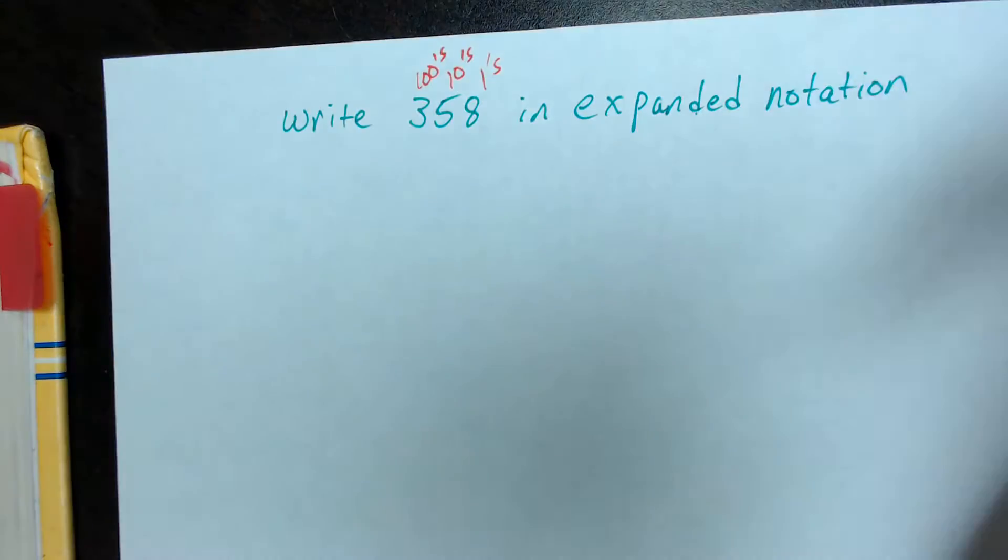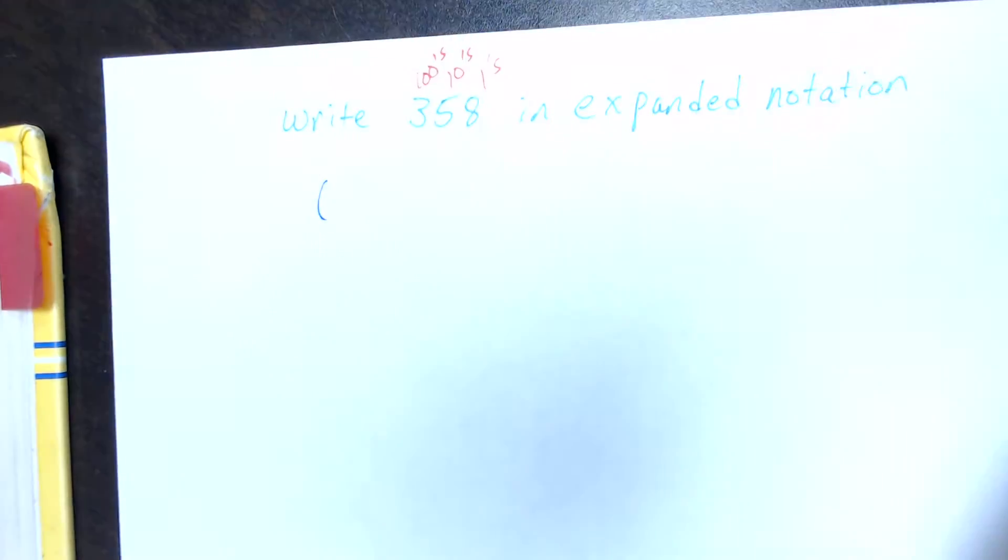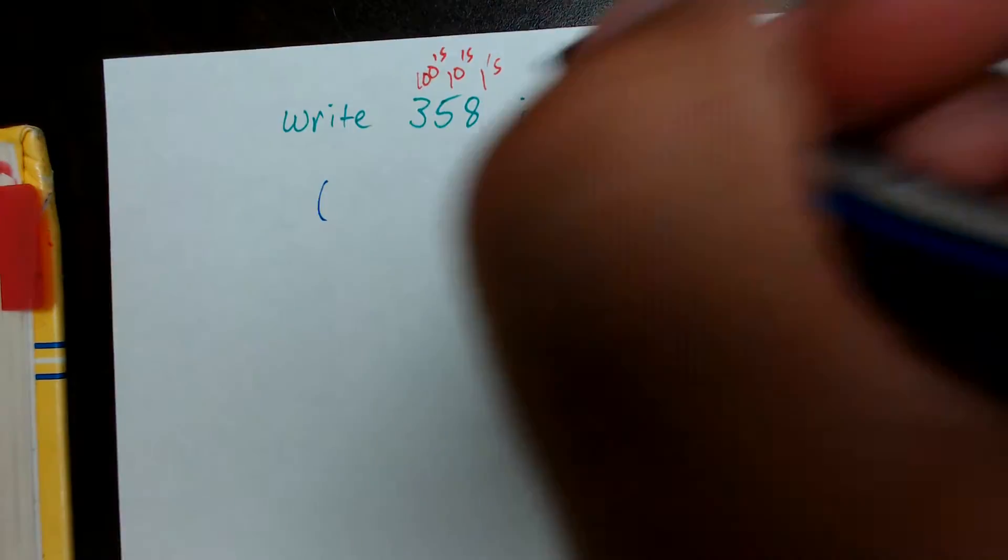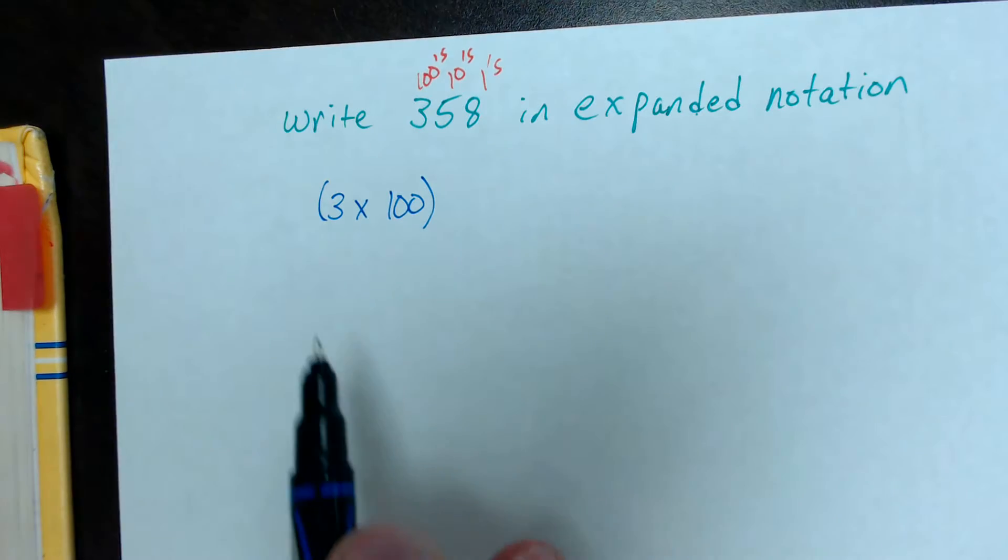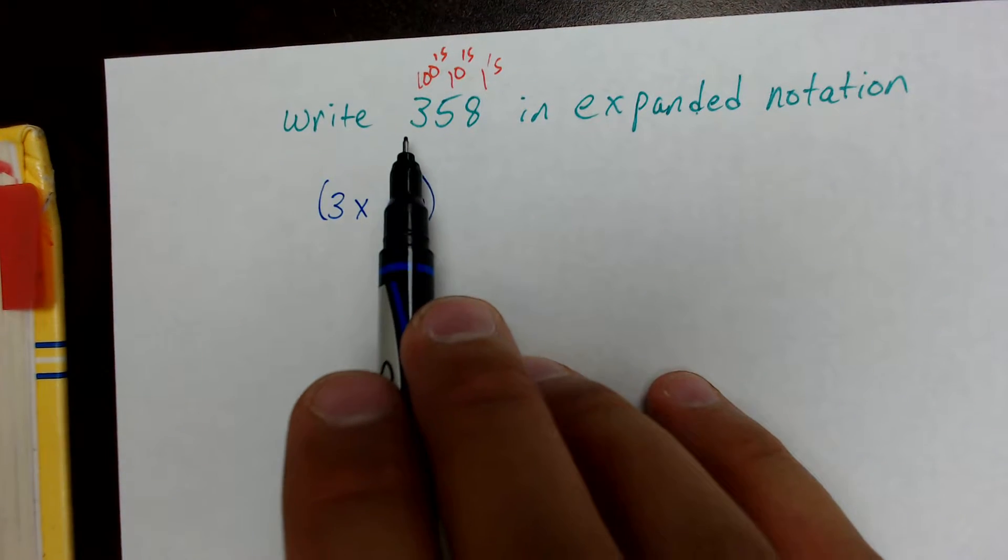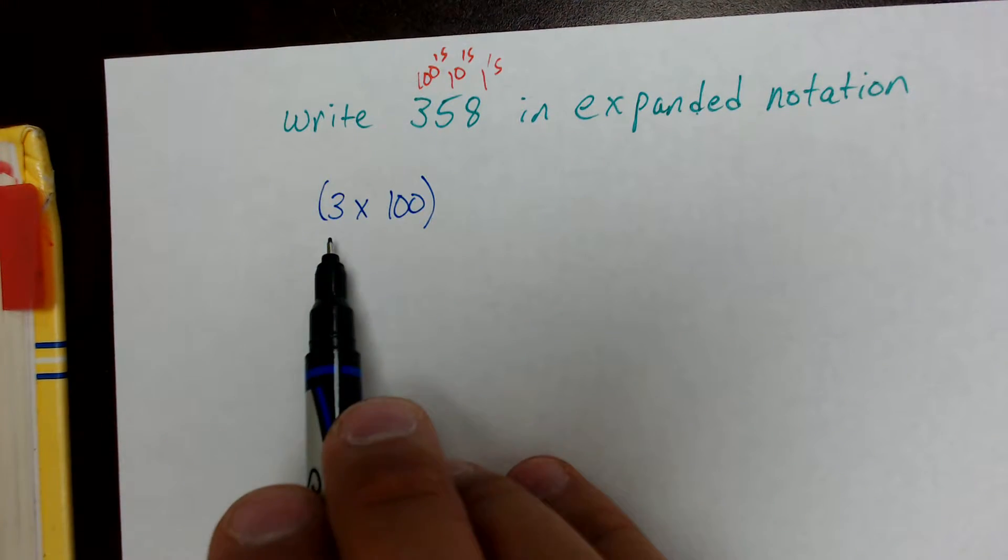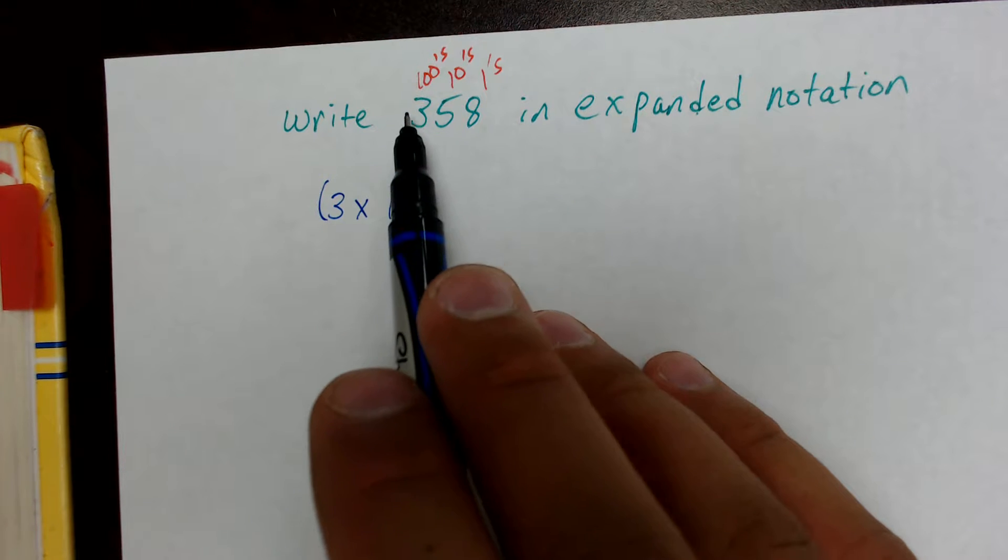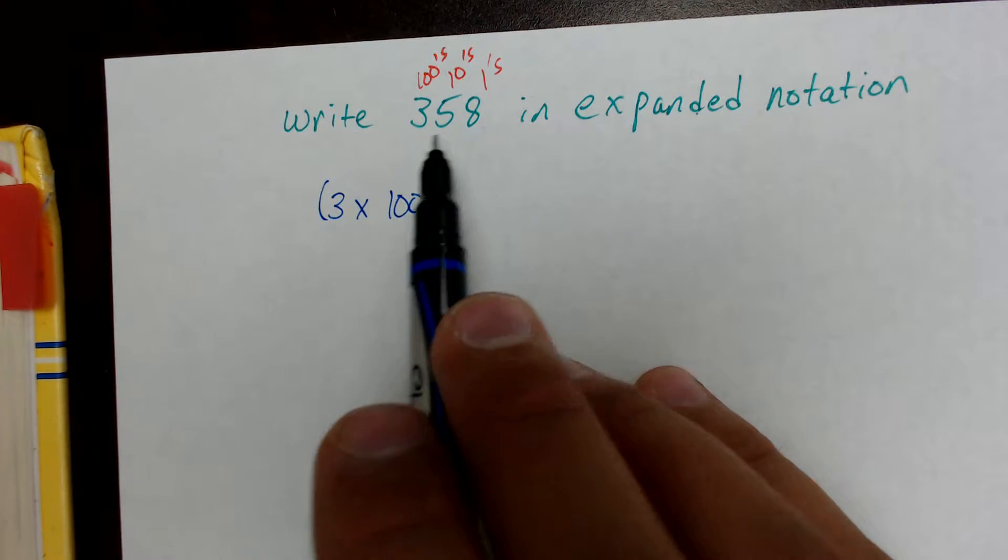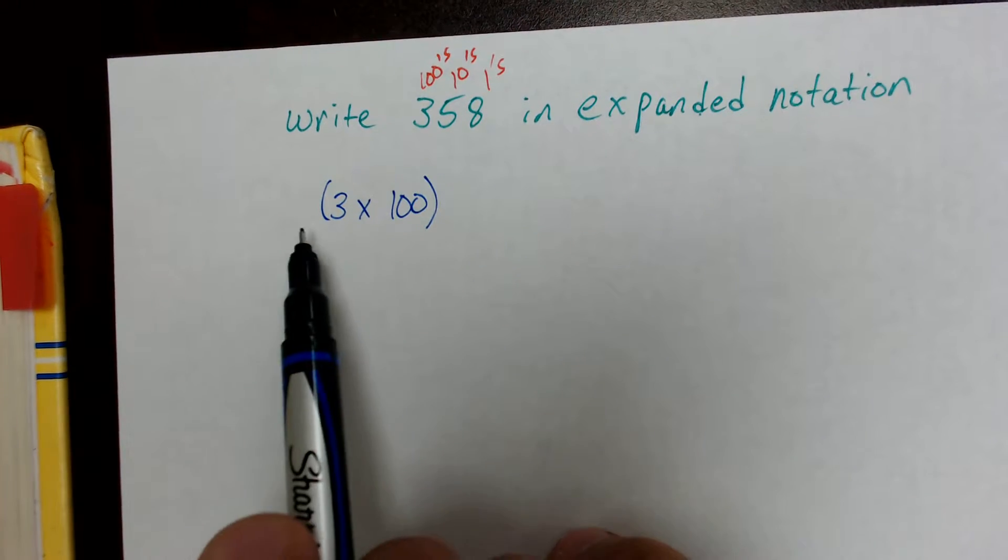Expanded notation is very precise. It's written inside of parentheses. So we take that number 3, we would put it inside of parentheses, and we would say 3 times 100, to let us know that that 3 isn't only the number 3, it's actually 300. So we're pretty much rewriting each digit based on its place value. So the first digit, 3, is 3 times 100.